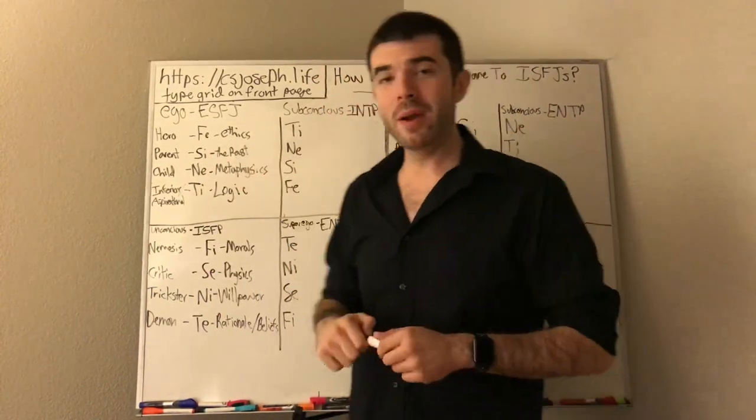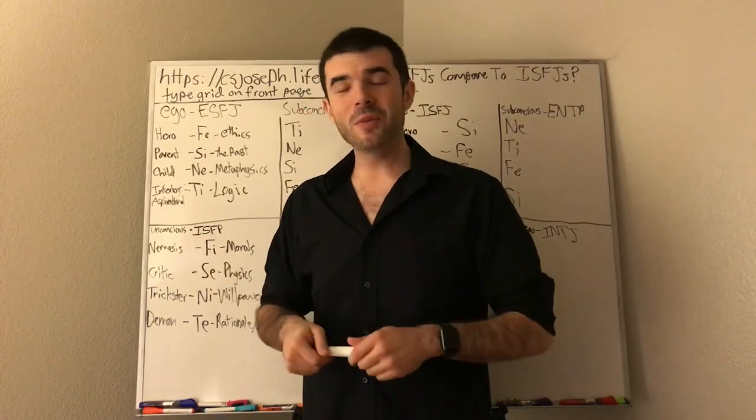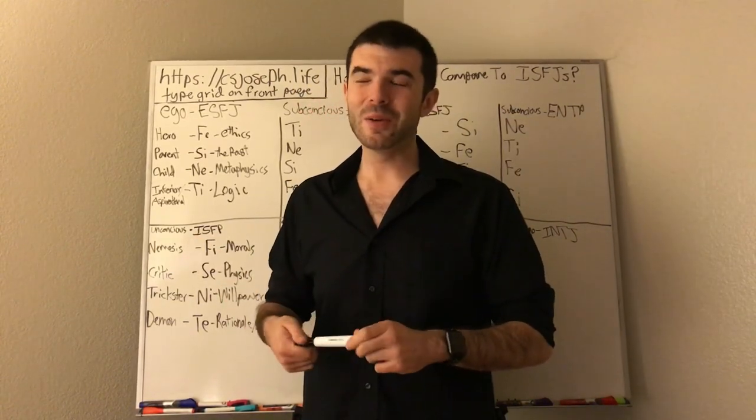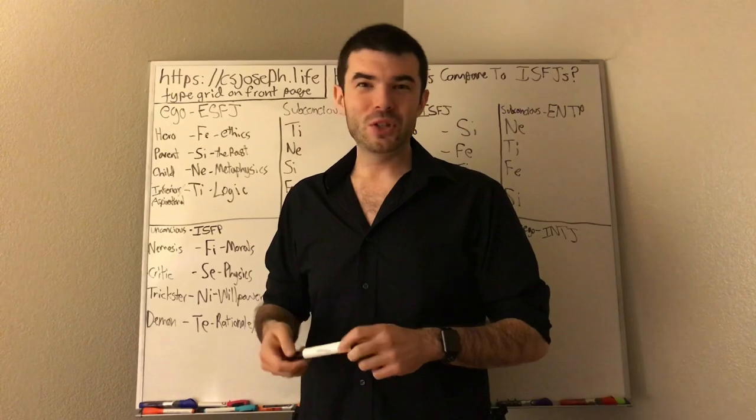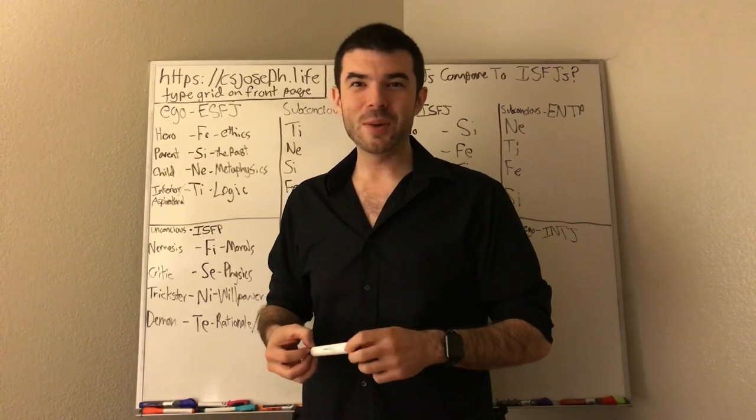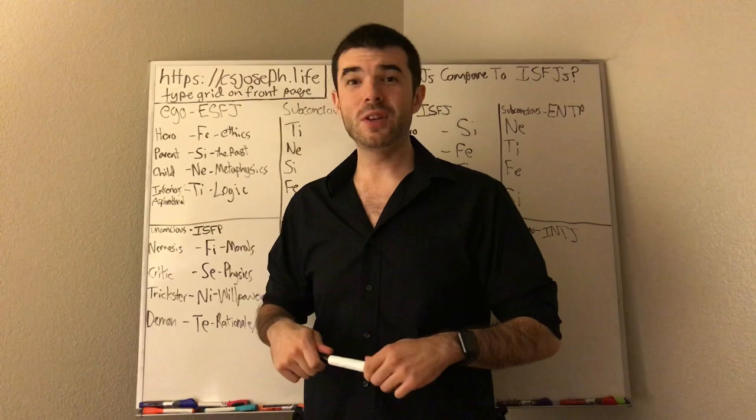Yes, ESFJ is the biggest doormat of all of the types easily taken advantage of by almost anyone. Unless, of course, they remember with their SI parent that you've screwed them in the past. And in which case, they'll remember that you screwed them. Fool me once shame on me, fool me twice, shame on you. That is so the way of the ESFJ.